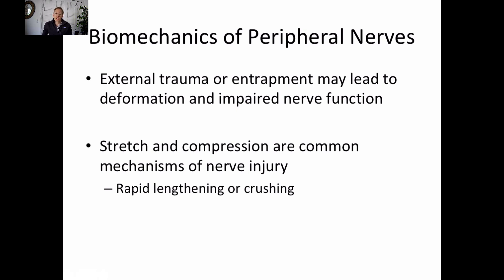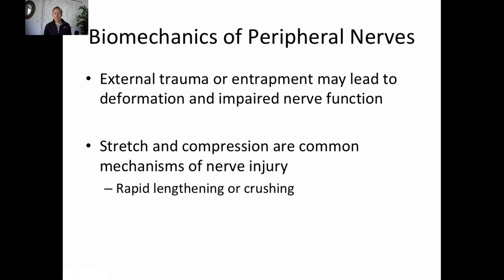Stretch injuries and compression injuries are the most common. Our nerves do have the ability to stretch a little and slide, but rapid lengthening or a crushing-type force can irreversibly damage our peripheral nervous system. Most people know the brain and spinal cord cannot regenerate — a spinal cord injury resulting in paralysis is generally permanent. With the peripheral nervous system, it can regenerate to a certain degree depending on severity. If it's really severe, it won't be able to regenerate either. We'll look at when a nerve is stretched or compressed, at what point that becomes irreversible.